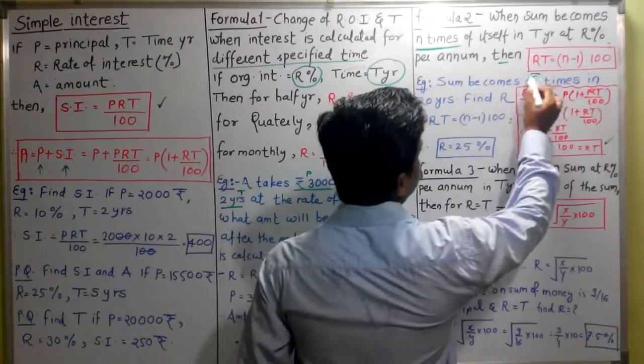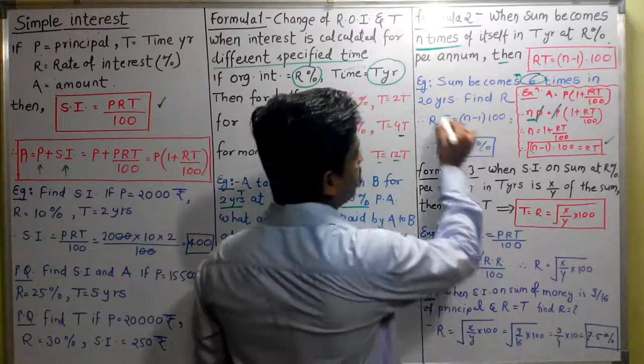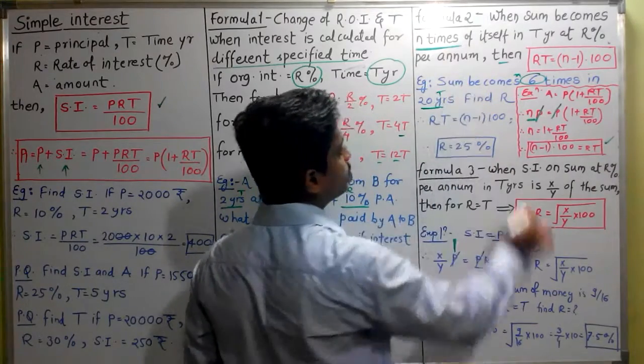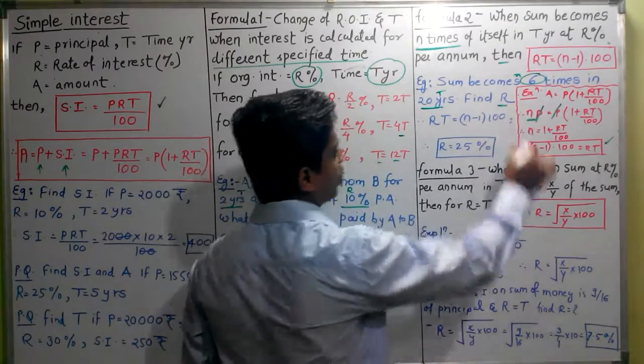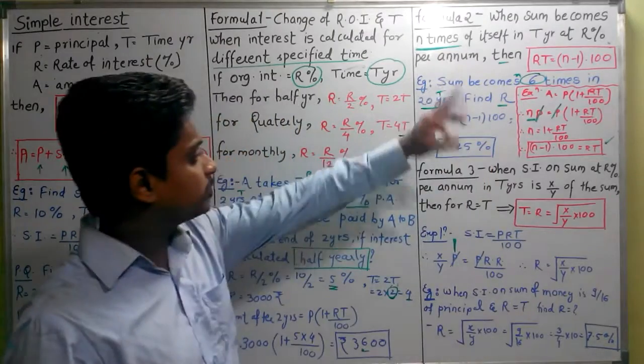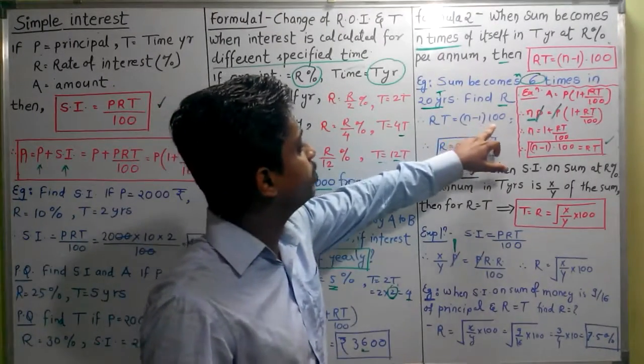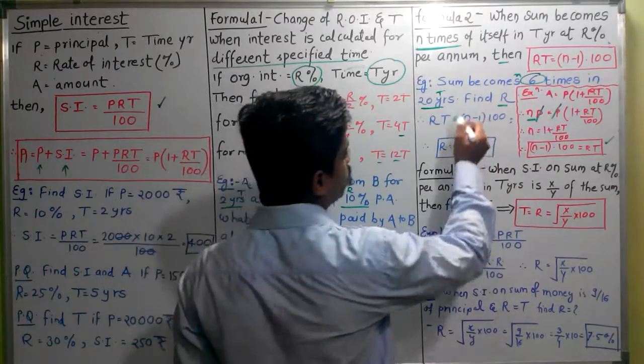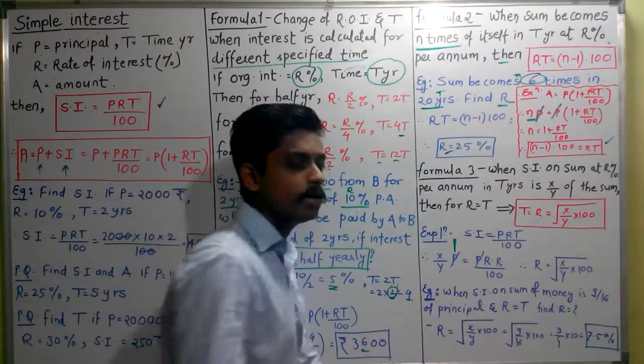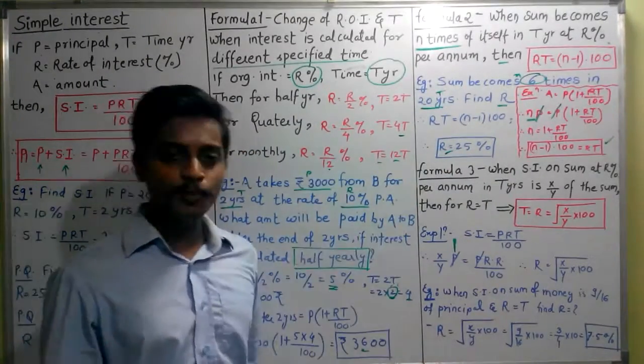Here is a basic numerical. Sum becomes 6 times in 20 years. That means N value is 6 times, time given is 20 years. So what to do? Simple formula substitute. RT is equal to (N minus 1) into 100. Substituting the values, RT value comes out to be 25%.